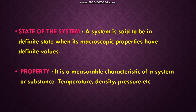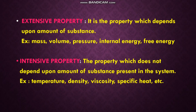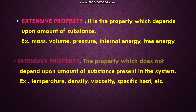Next is property — a measurable characteristic of the system or substance. Examples: temperature, density, pressure, etc. Properties can be divided into two types: extensive property and intensive property. Extensive property is the property which depends upon the amount of substance, that is, the mass. Examples: mass, volume, pressure, internal energy, and free energy.